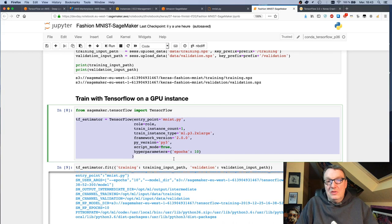Basically, this takes your script as a first parameter, your infrastructure requirements—so how many instances you want, what type of instance do you want—hyperparameters, etc., and the framework version.